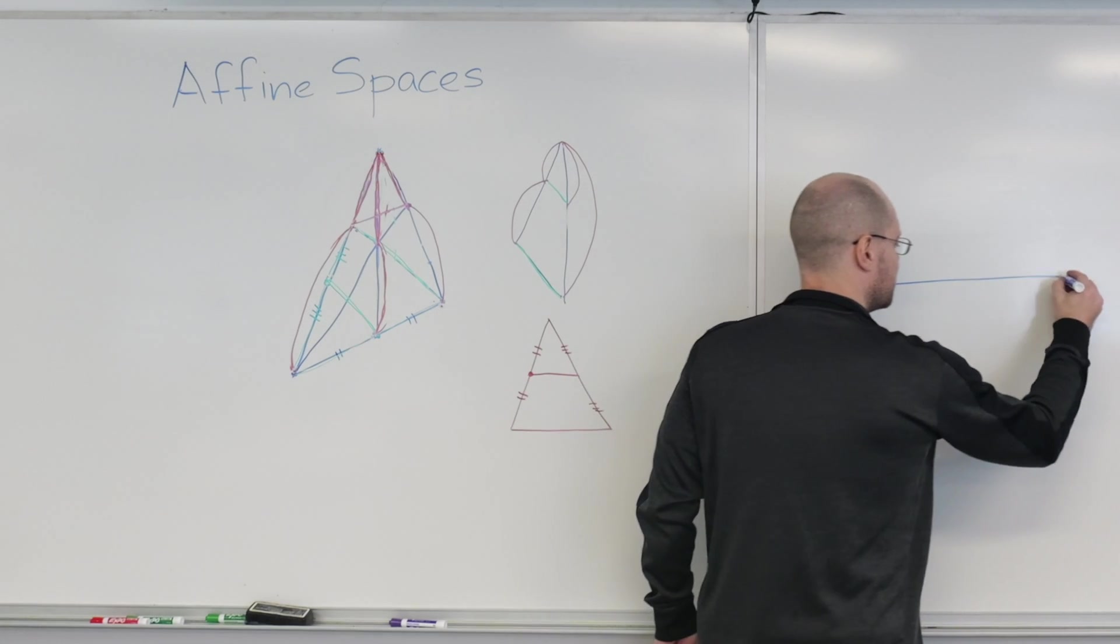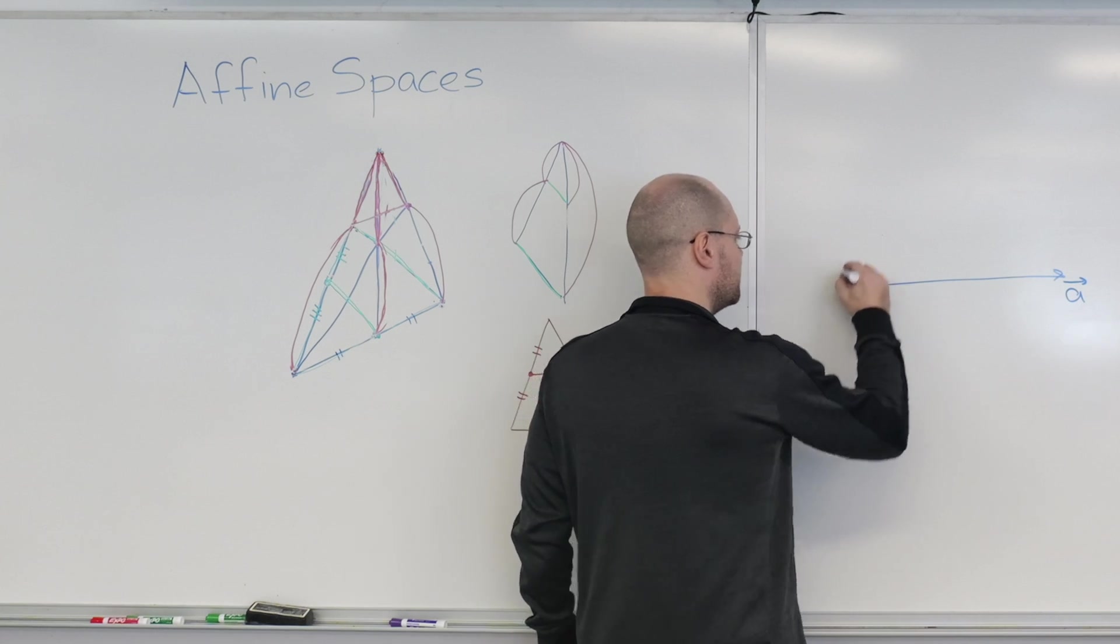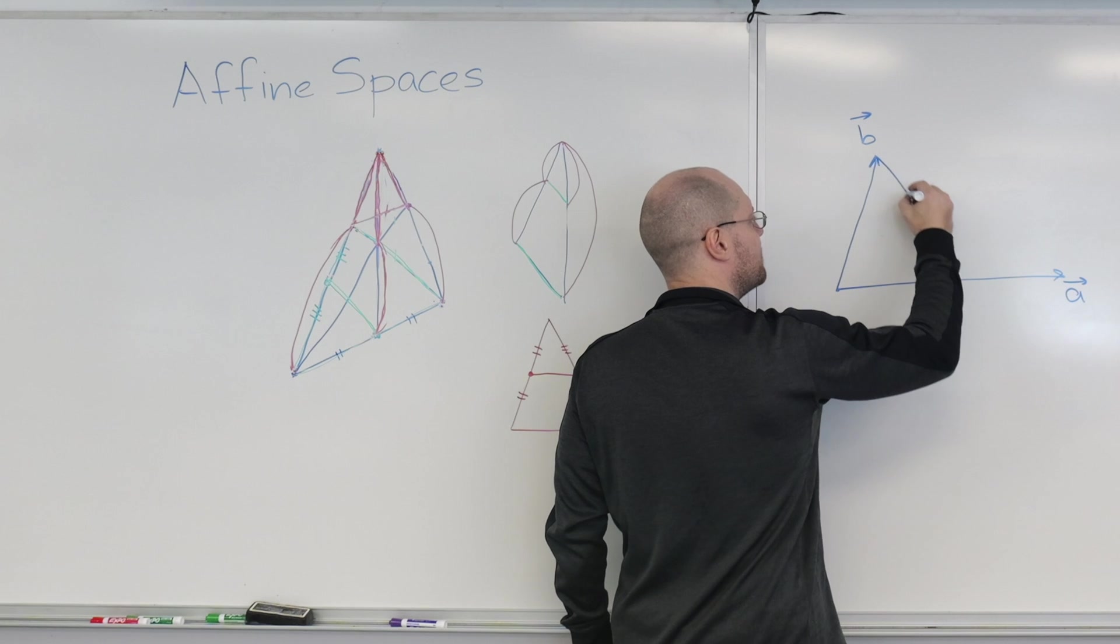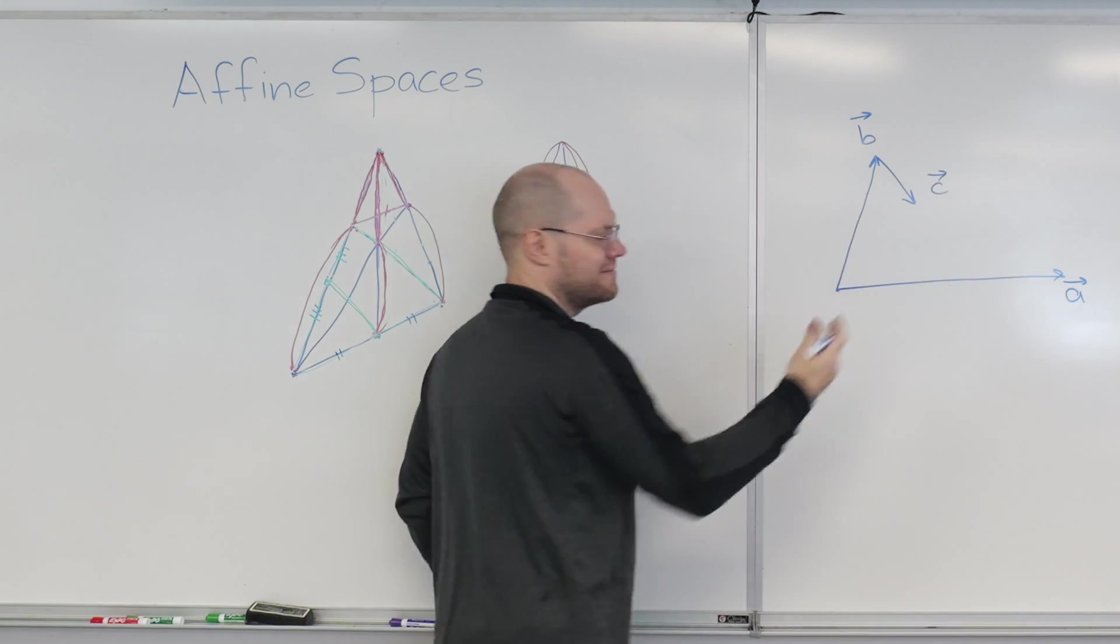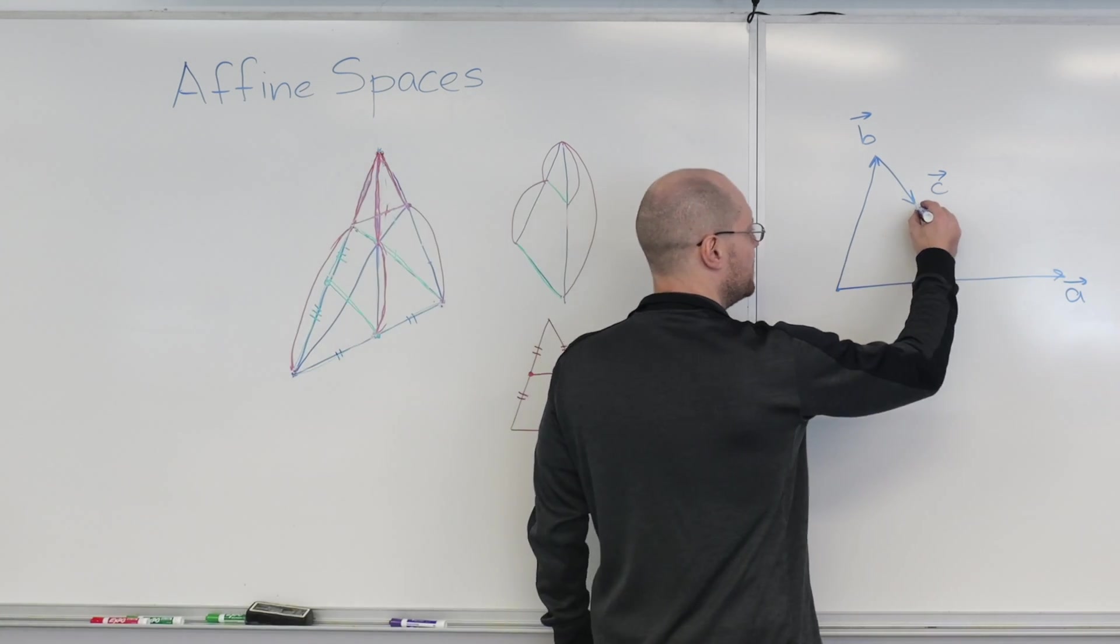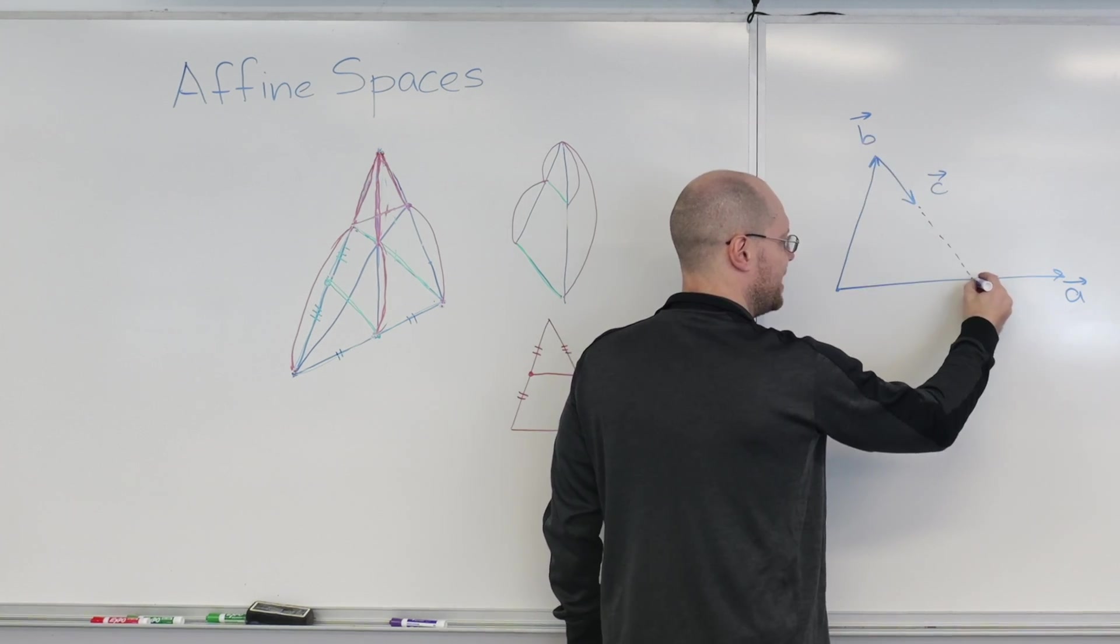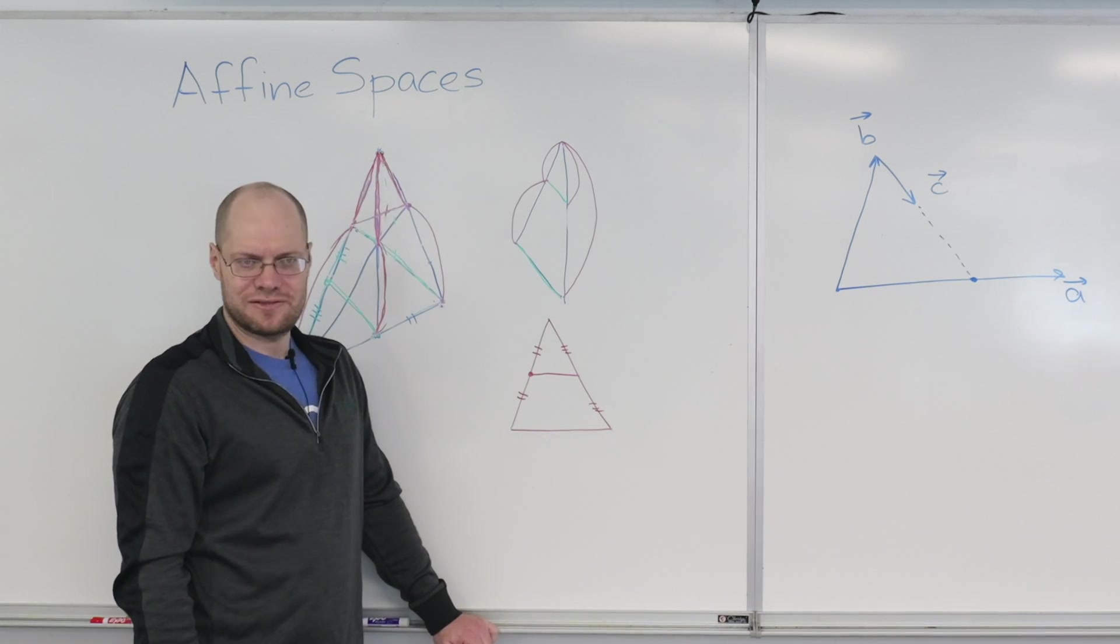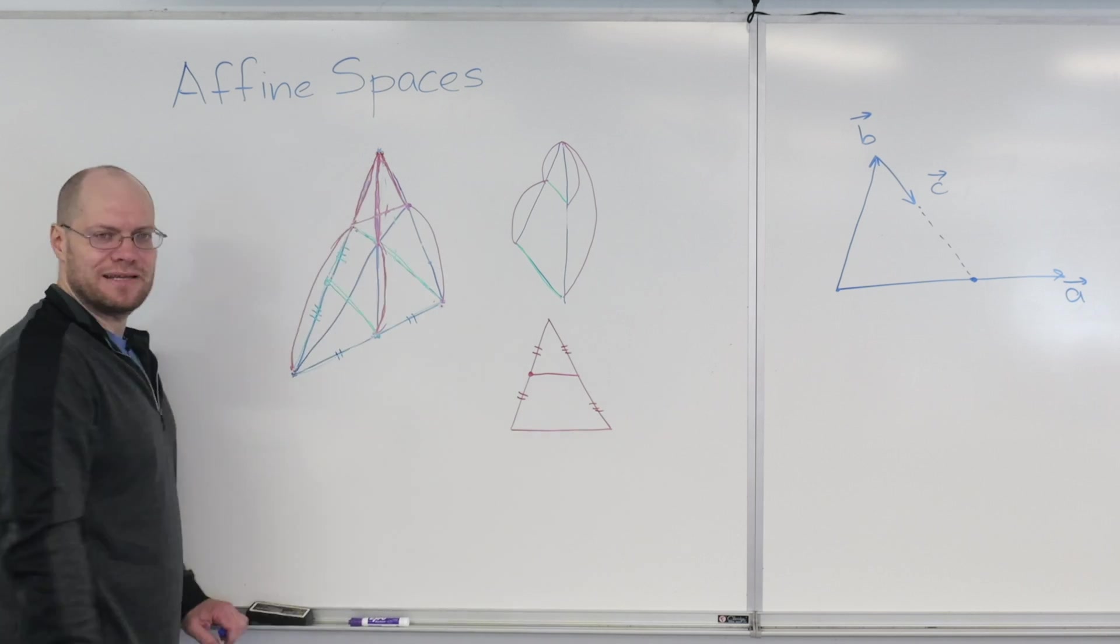If we have a vector A, and we have a vector B, and from the tip of B, we have a vector C pointing at a random direction, kind of towards A. Where will be the point where, if you were to continue that line, it intersects A? That's the question. Let's solve that algebraically, because that's kind of what's happening here.